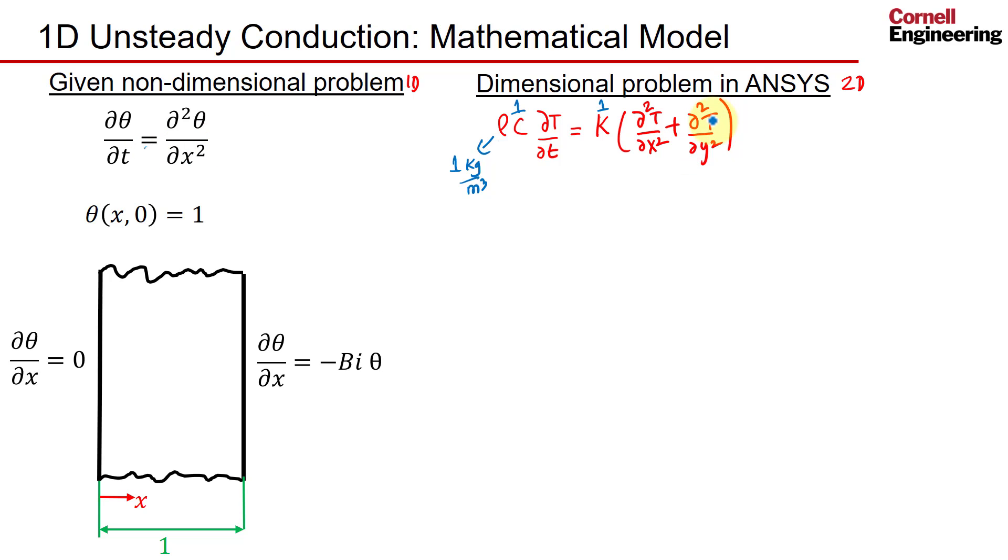I'll get to how to make sure that's zero. We'll solve this over a rectangle. The width of that rectangle has to be 1 because of the non-dimensionalization. The height is arbitrary because there's no variation in this direction.